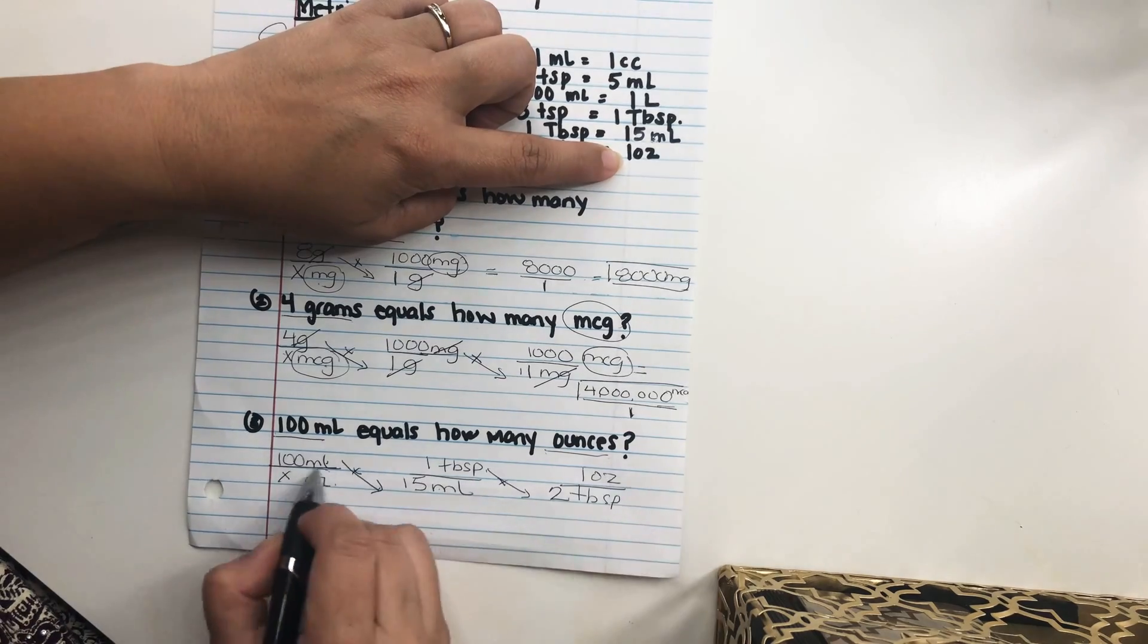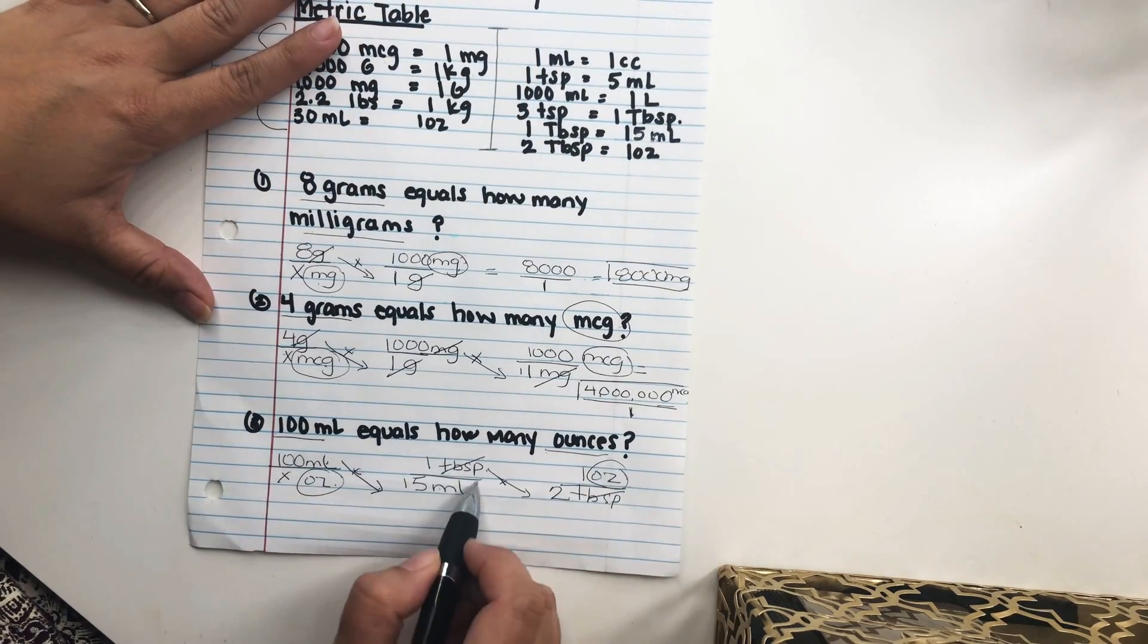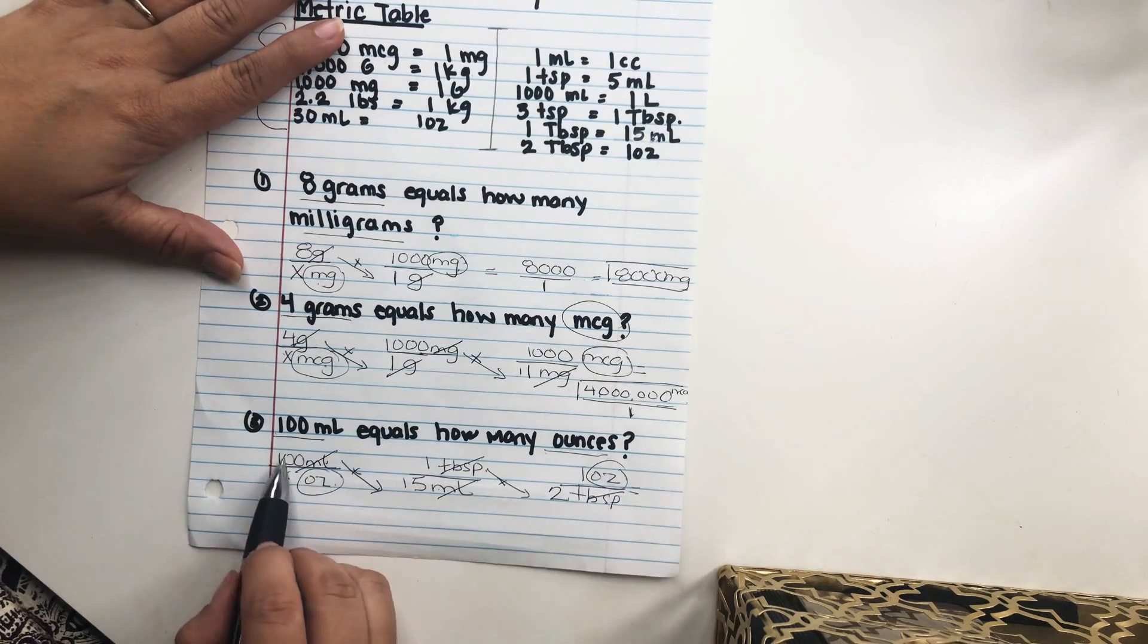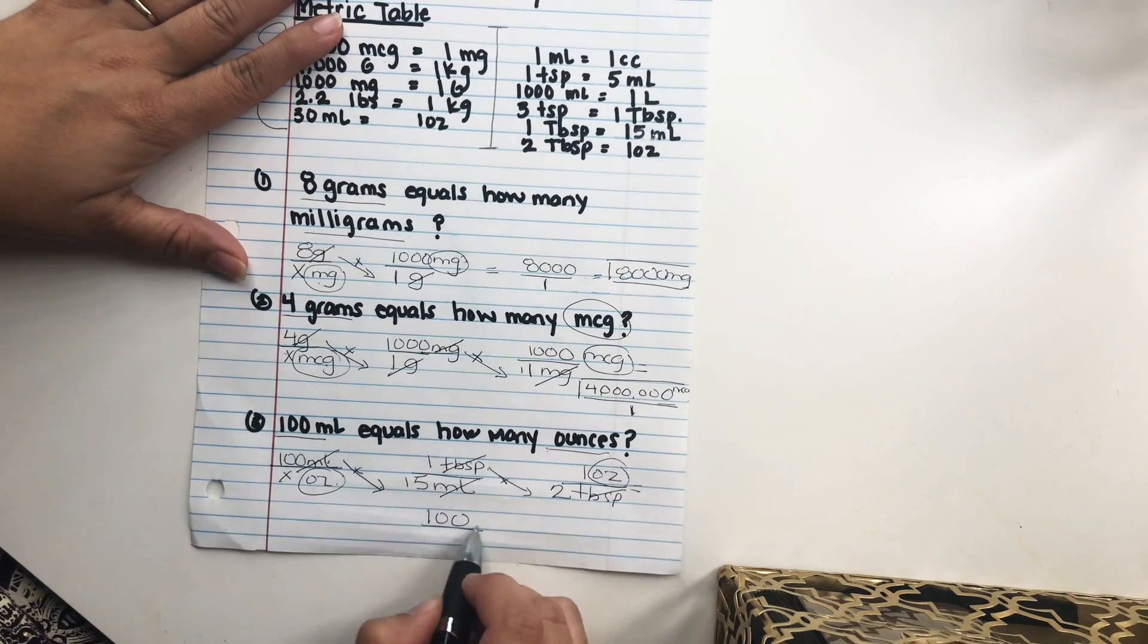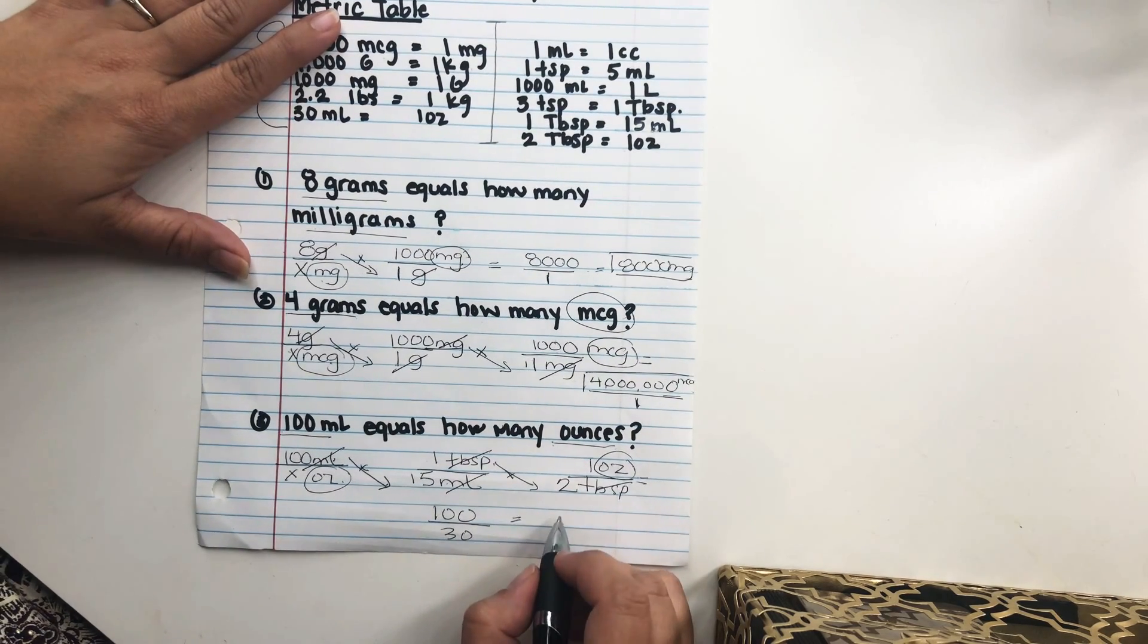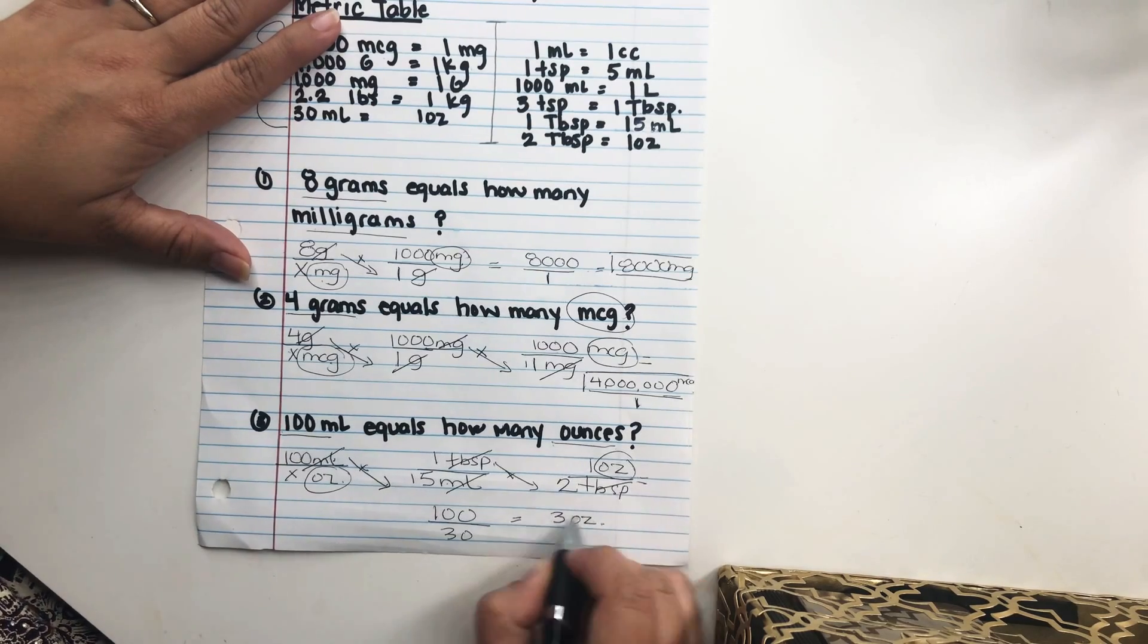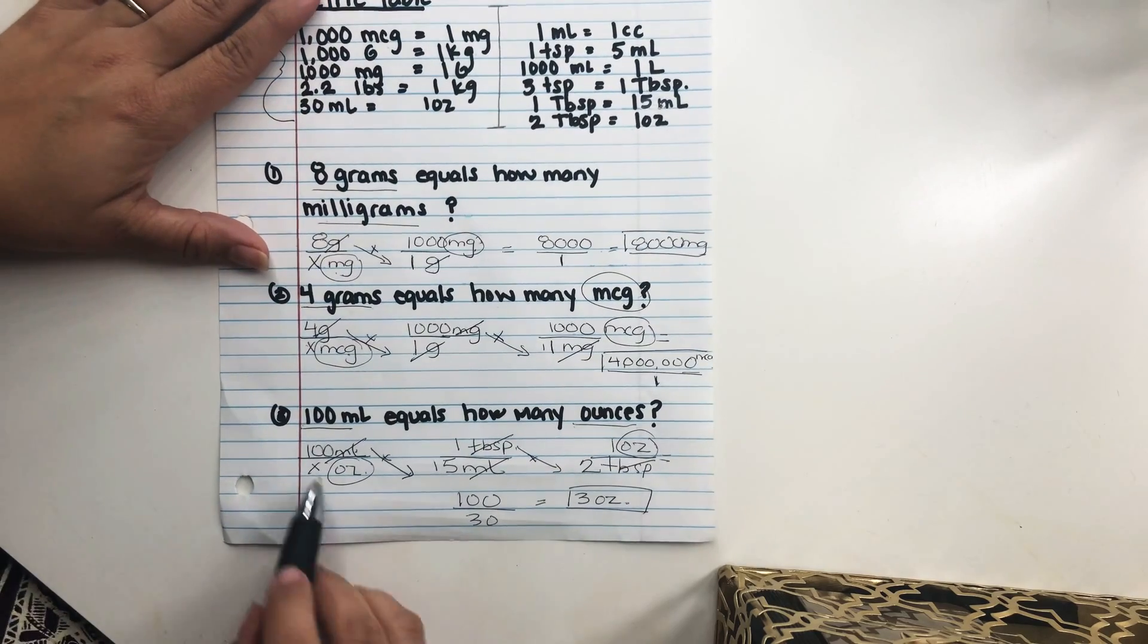And we know that two tablespoons equals one ounce. And that's what we need. We need ounces. So now we're able to go ahead and get rid of what we don't need. And we can go ahead and multiply across. So 100 times 1 times 1 is 100. And then we have X, which is 1. 15 times 2 is 30. And if we divide 100 into 30, that is 3 ounces. So that is how you can do the conversion for that.